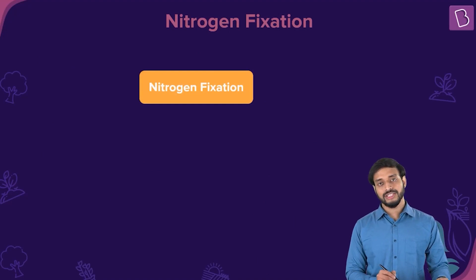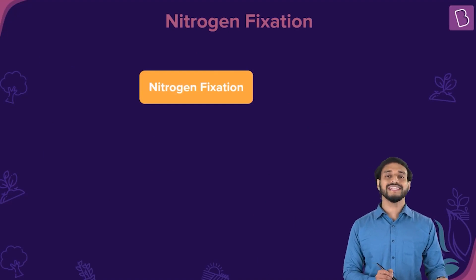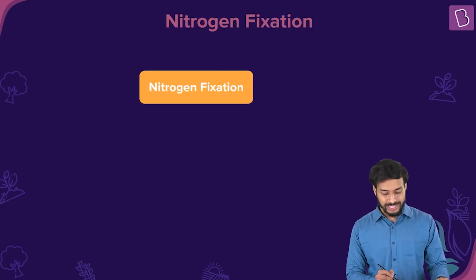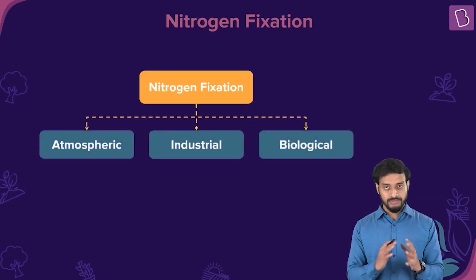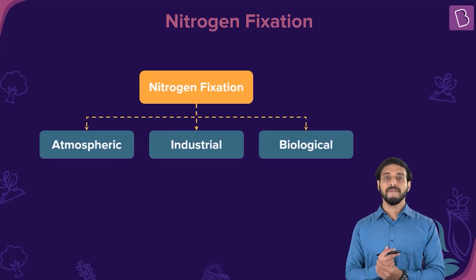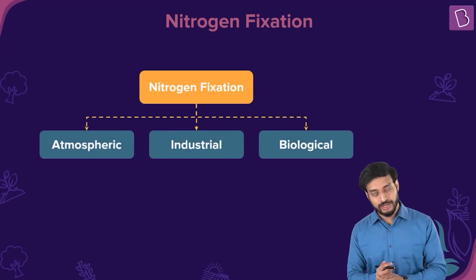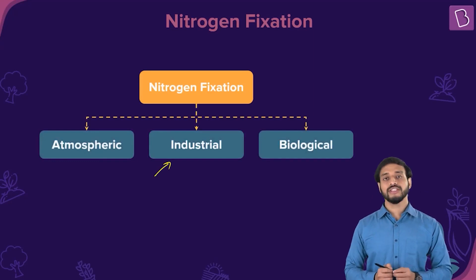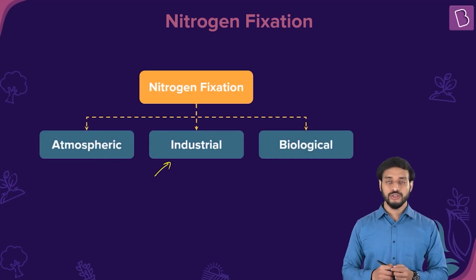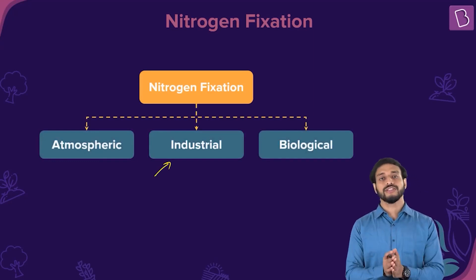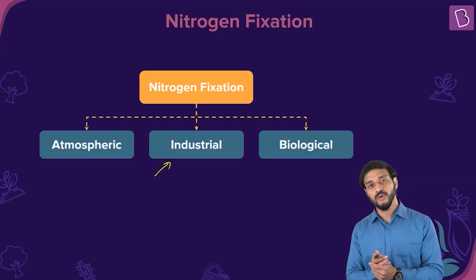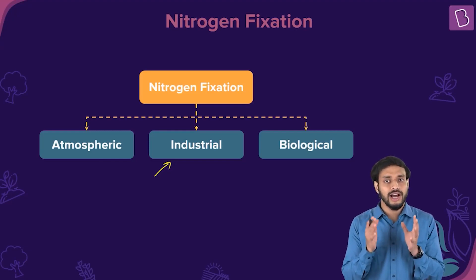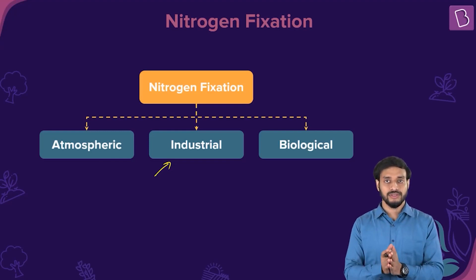There are three major ways in which nitrogen can be fixed: atmospheric nitrogen fixation, industrial nitrogen fixation, and biological nitrogen fixation. Let's study all of them.